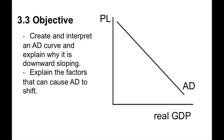If you look at this graph, the aggregate demand line is graphed on axes labeled PL and real GDP. We already know what real GDP is — it's a measure of output in the economy, adjusted for inflation. The y-axis, PL, stands for price level, and that would be measured by a price index, like the GDP price deflator or the consumer price index. But we're not going to use specific numbers here — just a general indicator of price level.